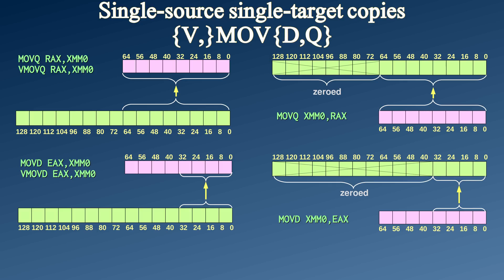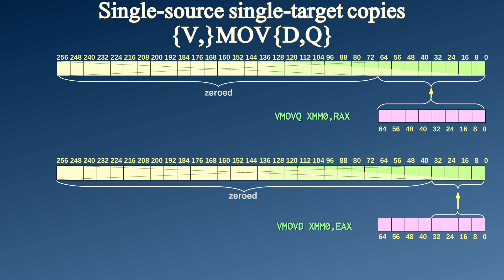At least when they added their Streaming SIMD Extensions, or SSE, they were consistent. When you copy 32 bits between a base register and an XMM register, you would use MOVD, and MOVQ when copying 64 bits. Later on, when they added AVX, they added V to the name of every instruction encoded using the VEX encoding, but other than that, they stayed consistent.